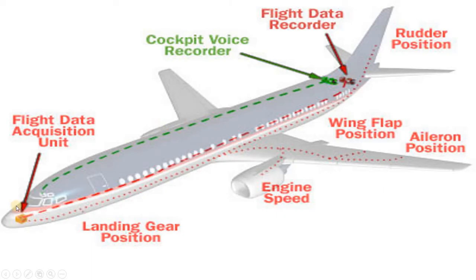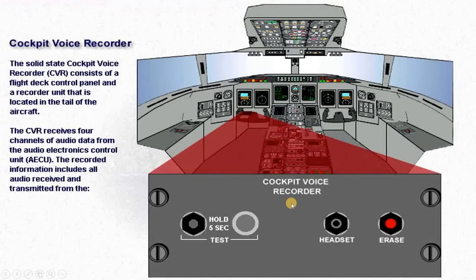Another important thing is the flight data acquisition unit. This flight data acquisition unit serves as an acquisition unit which receives data from different aircraft systems like engine speeds, wing flap positions, aileron positions, rudder position, and landing gear position. All these positions are being transmitted to the flight data acquisition unit, and the flight data acquisition unit transmits this data to the flight data recorder.